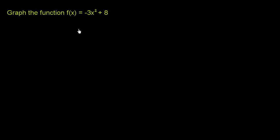The first question is: just looking at this function definition, what type of graph will this be? Will it be a line, a parabola, a circle, or something else? This is pretty clearly going to be a parabola. The function has a second-degree term — negative 3x squared — with no x cubed or x to the fourth, so this is going to be a parabola.